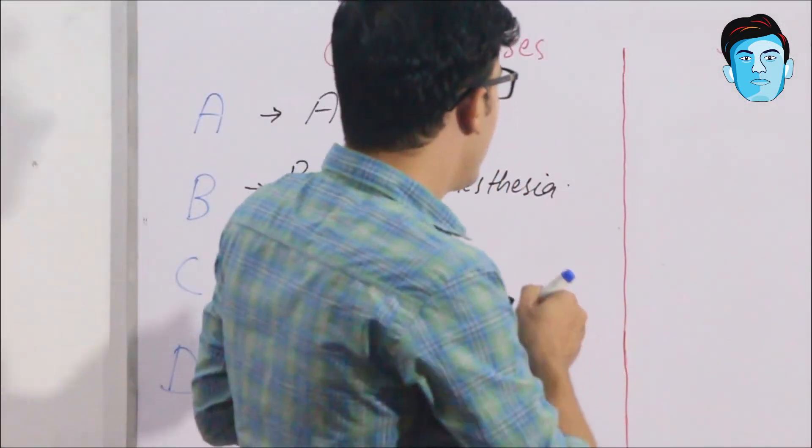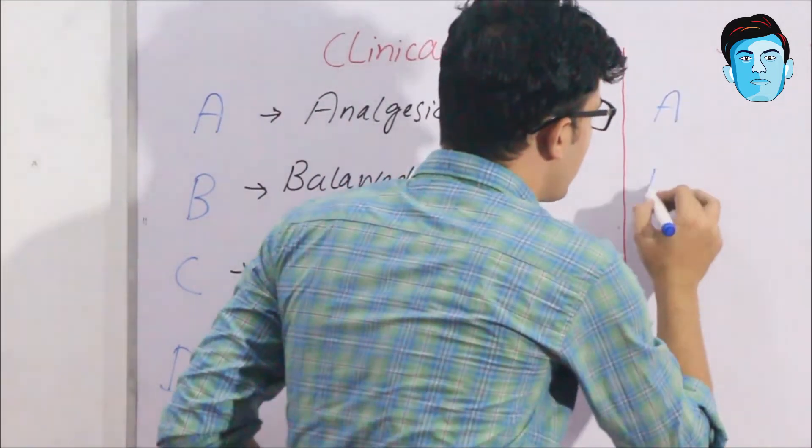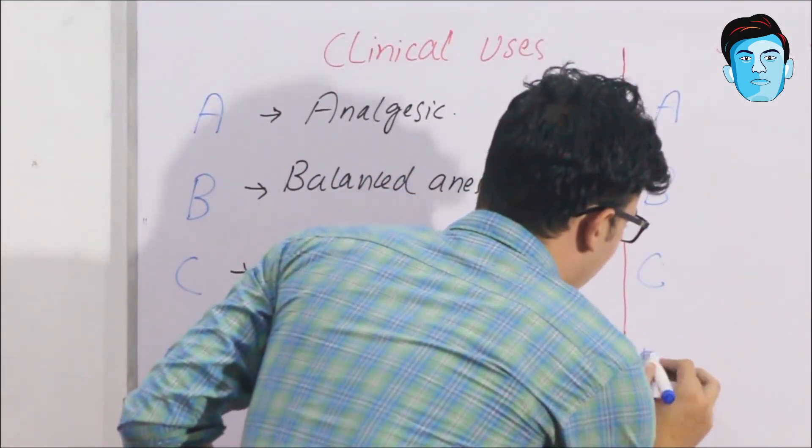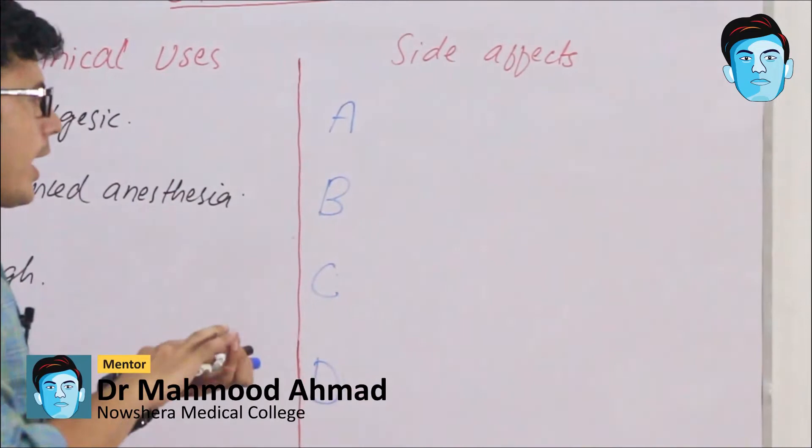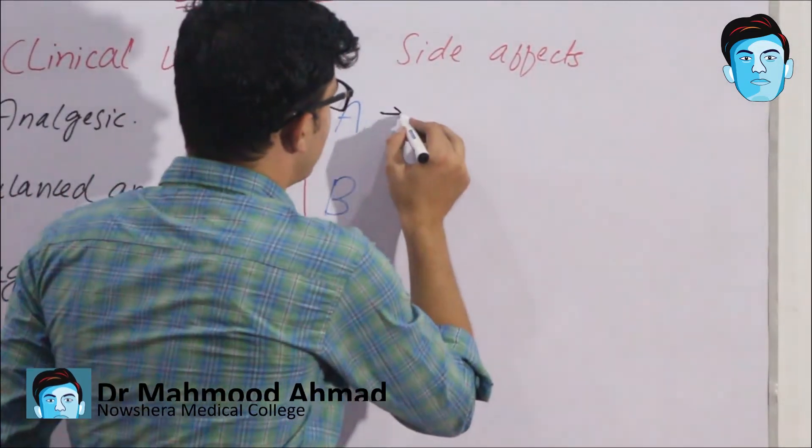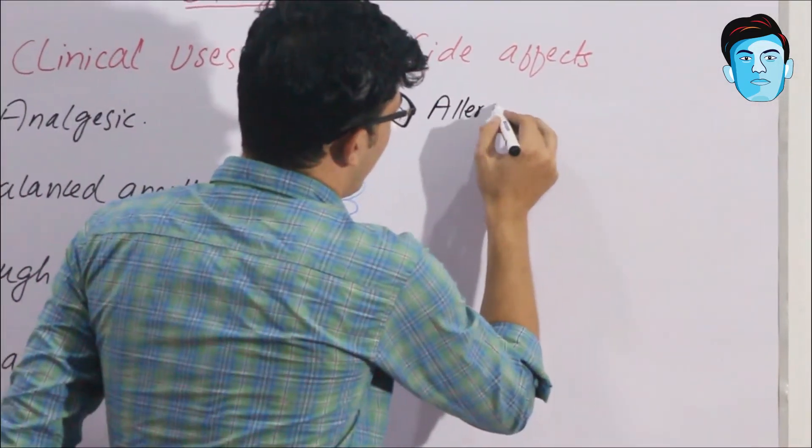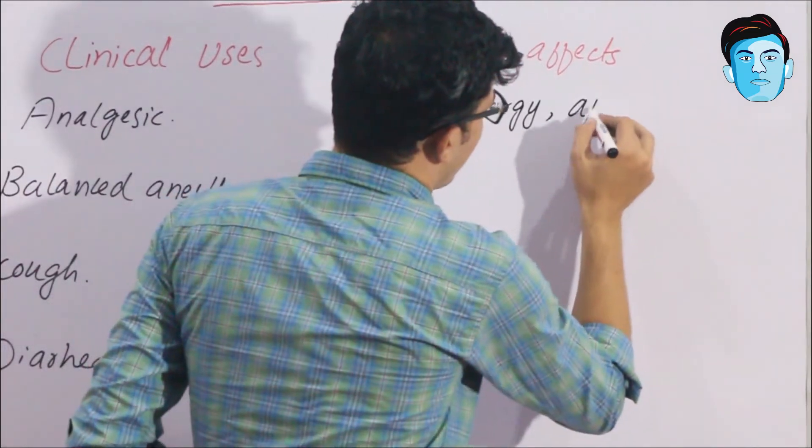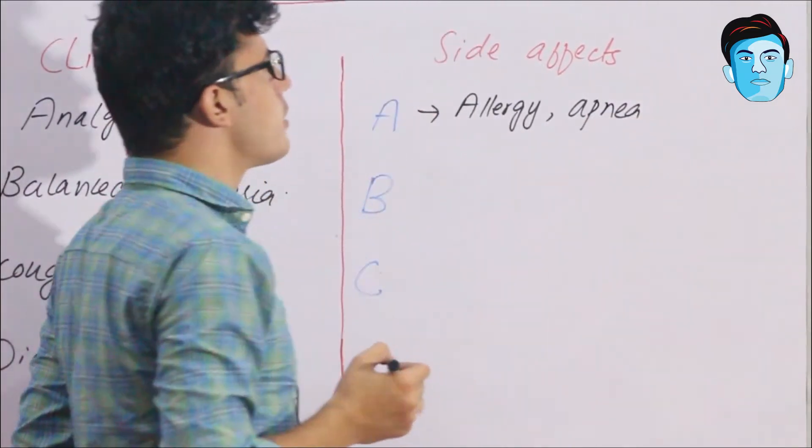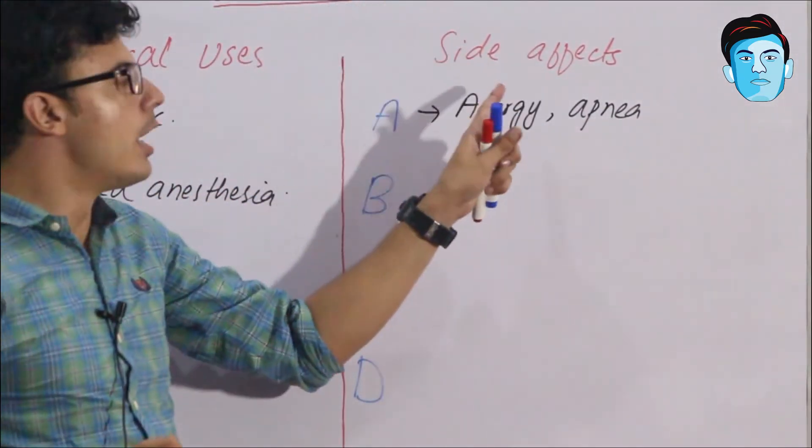For the side effects we have the same trick: ABCD. A stands for allergy and apnea. The most important side effect of opioid drugs is that they may cause allergy and apnea, that is shortness of breathing.